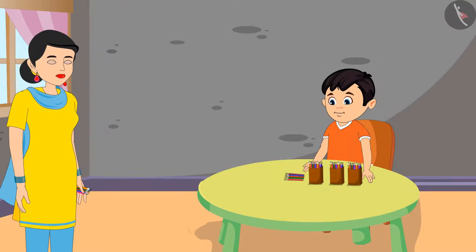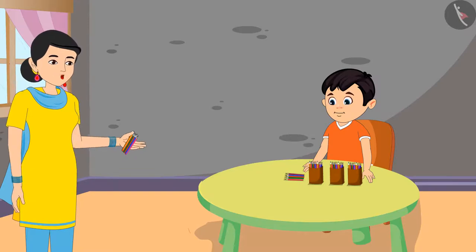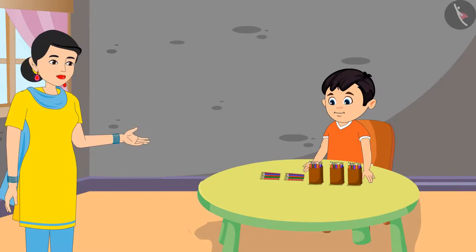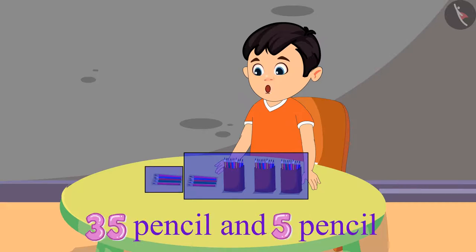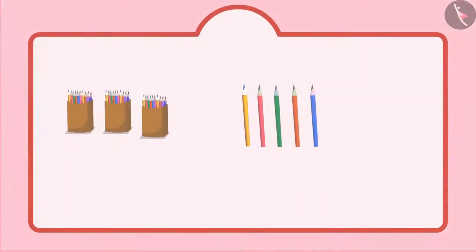After some time, Chotu's mother found some more of his pencils. Chotu, see I have got 5 more of your pencils. Keep these together as well. Okay, mummy. I had 35 pencils and now 5 pencils more. And that means 5 units more.